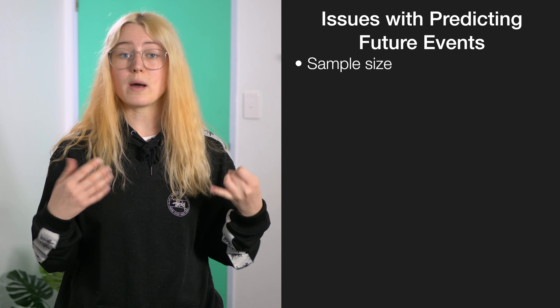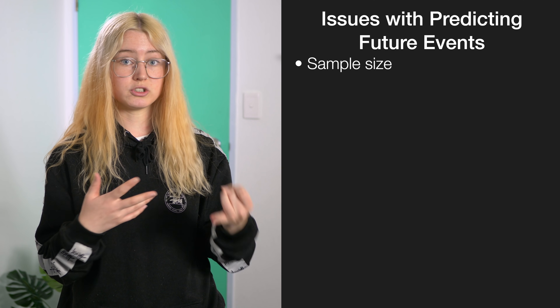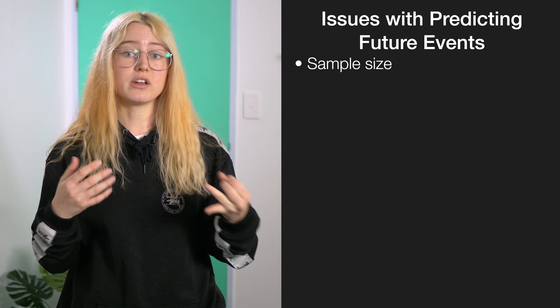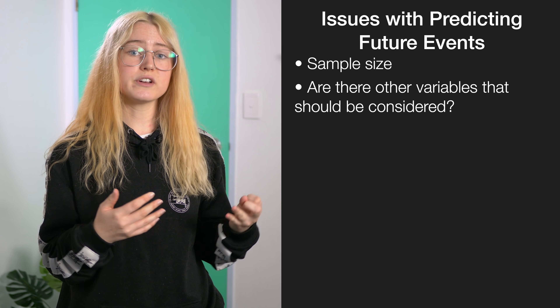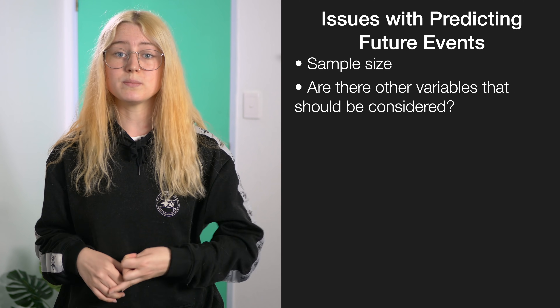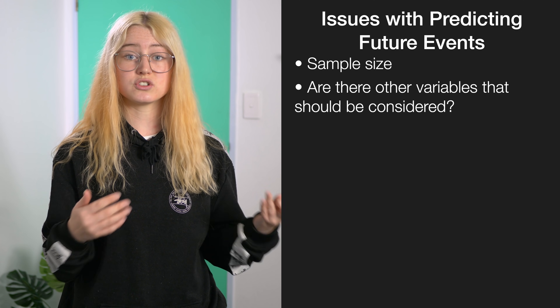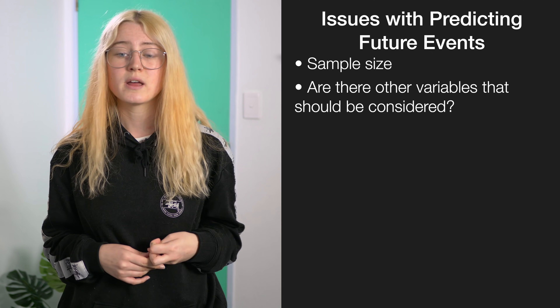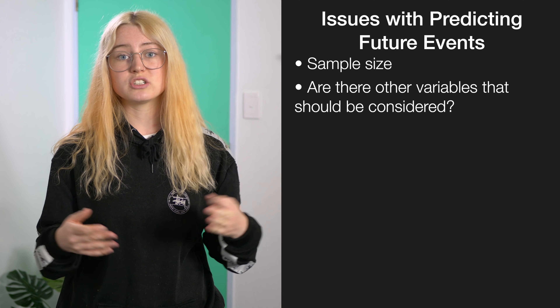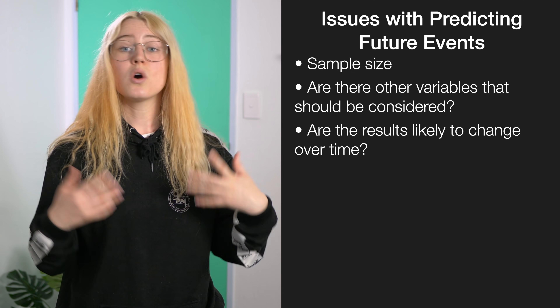For example, you might use a class's average score on a test from one year to predict next year's results. Problems with this could include sample size — was it above 30, the minimum we should aim for? There might also be confounding variables, such as the amount of study students do prior to the test. You should also consider changes over time, like whether the test has gotten easier or more difficult.